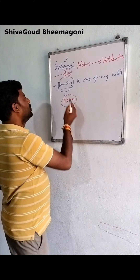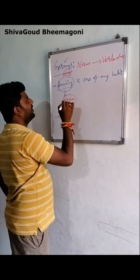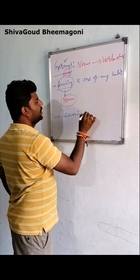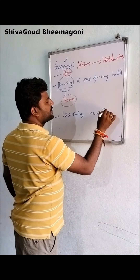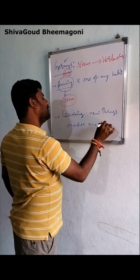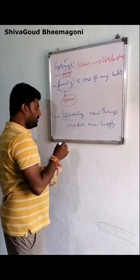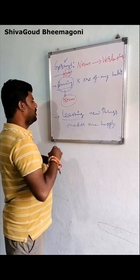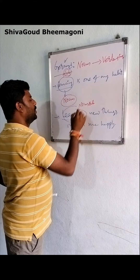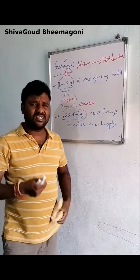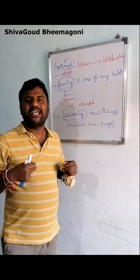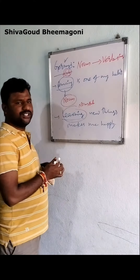Gerund is a noun, and it becomes the subject. One more example: learning new things makes me happy. Is learning doing any action here? No. Learning has become a noun and the subject here. Someone is not learning right now. I am telling you — if I learn new things, it makes me happy. These kinds of words are called gerund.